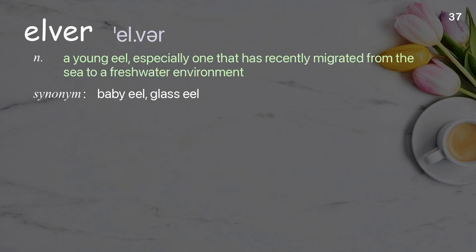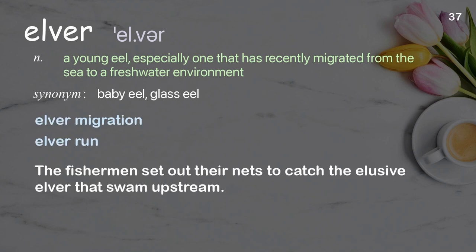Elva: A young eel, especially one that has recently migrated from the sea to a freshwater environment. Examples: Elva migration, elva run. The fishermen set out their nets to catch the elusive elva that swam upstream.